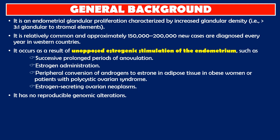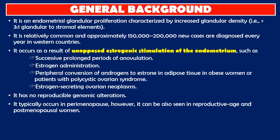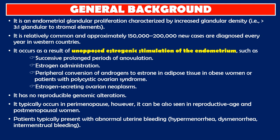It typically occurs in perimenopause; however, it can also be seen in reproductive-age and post-menopausal women. Patients typically present with abnormal uterine bleeding such as hypermenorrhea, dysmenorrhea, and intermenstrual bleeding. It is occasionally asymptomatic and diagnosed incidentally.